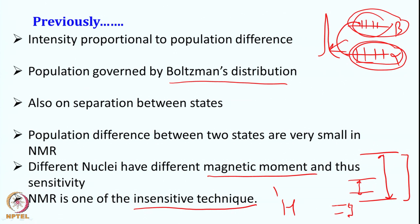To summarize: the intensity for a particular signal depends upon the difference in population of the ground state to excited state. For electronic spectra like fluorescence or UV-visible, the population difference between these two states is quite large, so the signal intensity is remarkable. In NMR, the difference in population is smaller, making it one of the insensitive techniques. This population is governed by Boltzmann distribution, and nuclei like nitrogen-15 or carbon-13 are even less sensitive. With this background we will move ahead to understand the concept of polarization transfer.